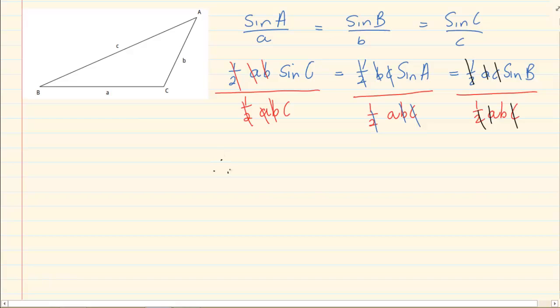Therefore, we now proved the sin rule. Sin C over c is equal to sin A over a, which is equal to sin B over b.